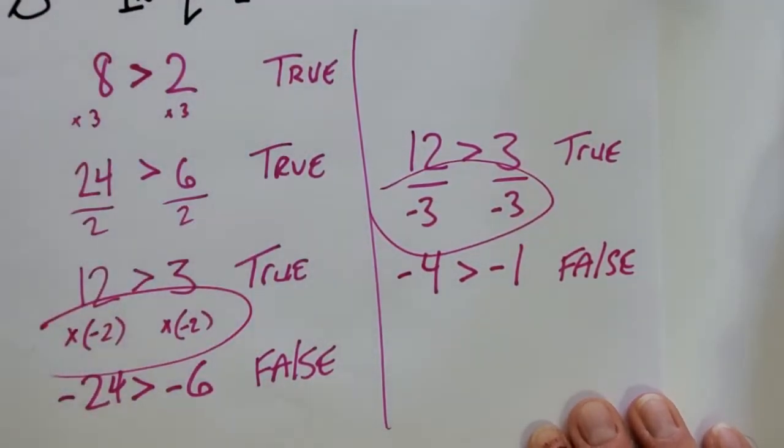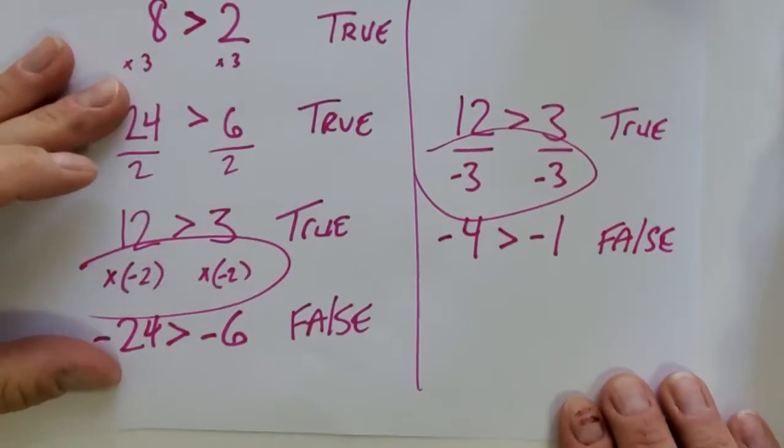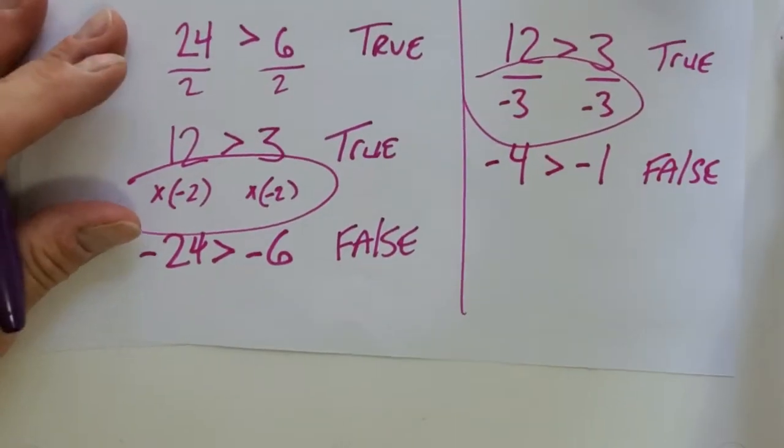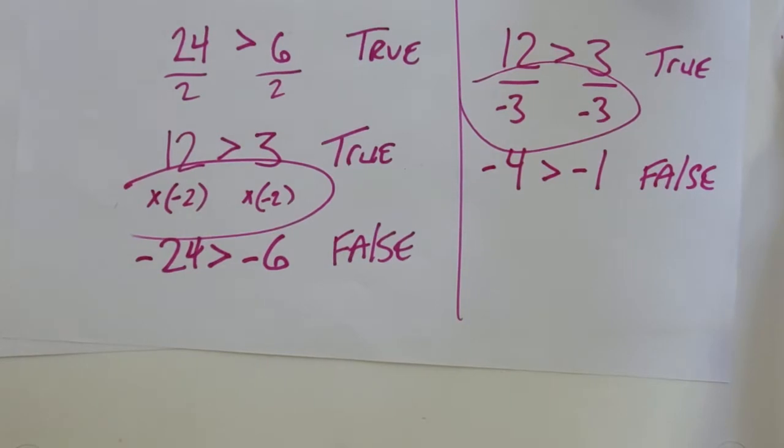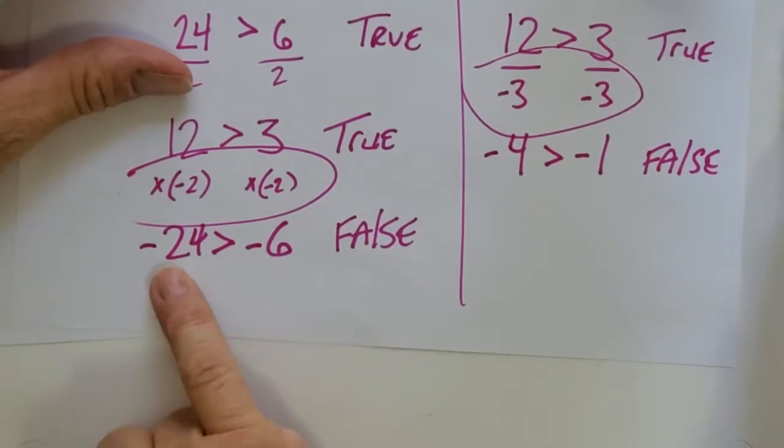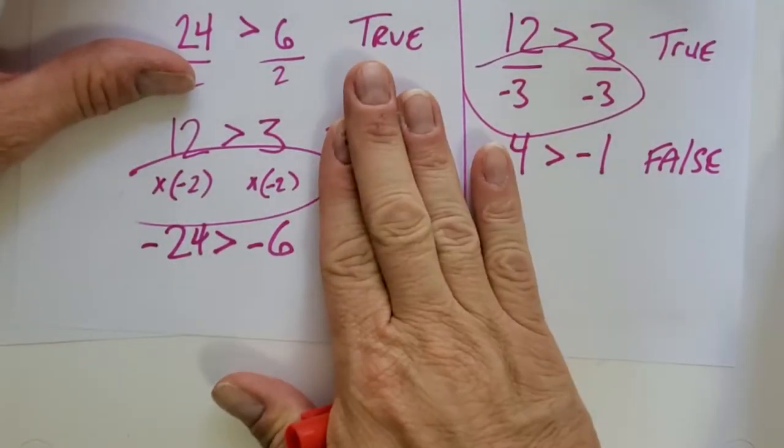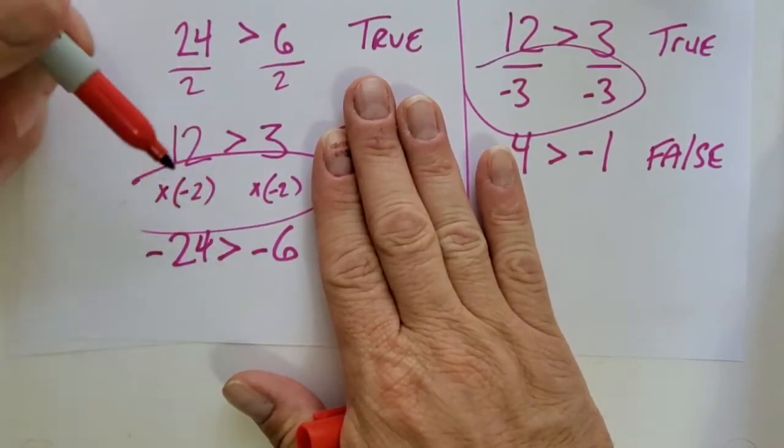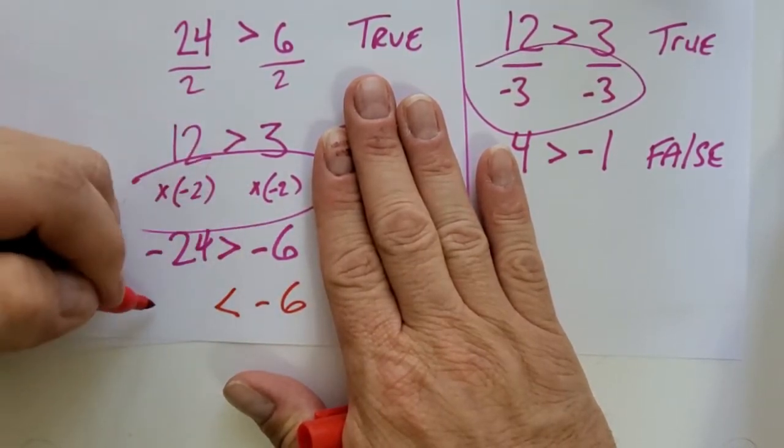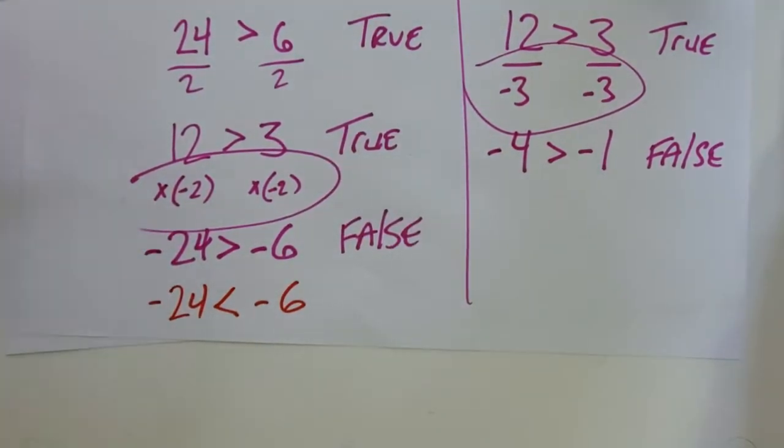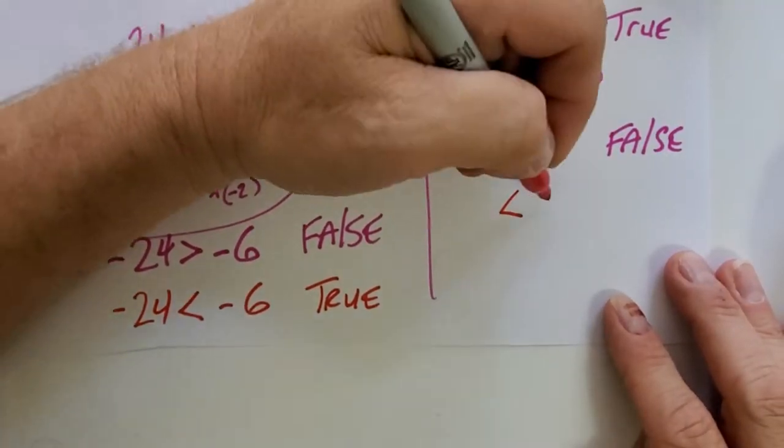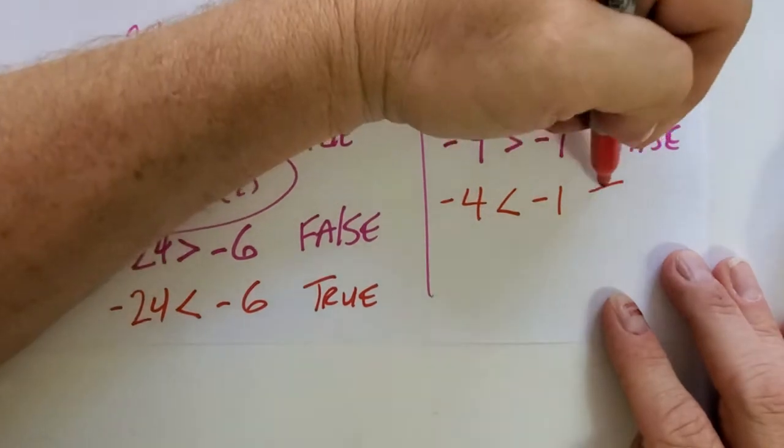When you multiply or divide by a negative, it makes the inequality false. So what do you think you have to do about that? How can you correct it? How can I take this, which we say is false, and suddenly make it true again? I'm going to change the sign. So if we take the inequality symbol and flip it around, it's true.